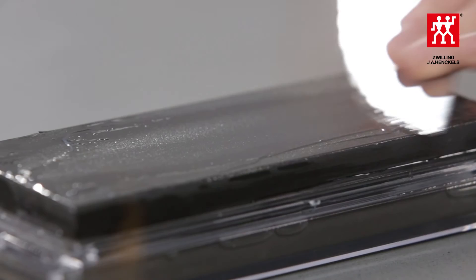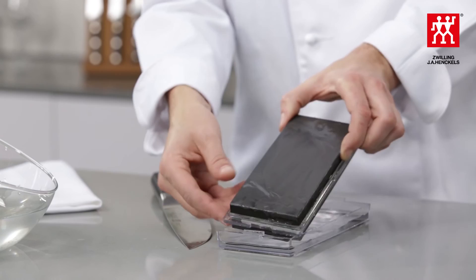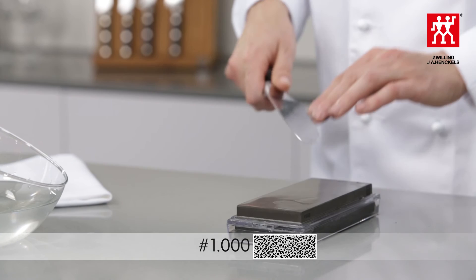Then repeat the process on the other side of the blade. The water, stone and grinding dust produces a polishing paste, which optimizes the sharpening result. Therefore, do not remove it during the sharpening process.